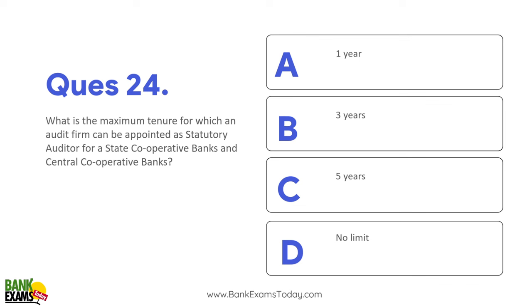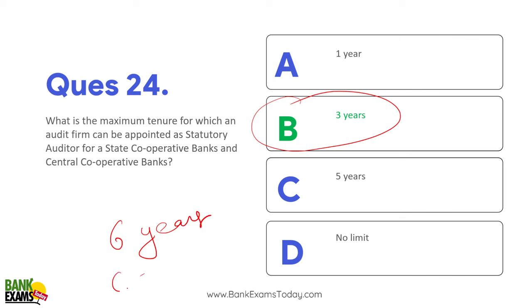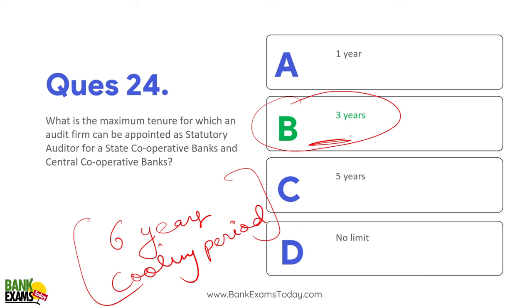What is the maximum tenure for which an audit firm can be appointed as statutory auditor for state or central cooperative bank? Teen saal ke liye kisi bhi audit firm ko appoint kiya ja sakta hai for state and central cooperative bank. Uske baad 6 saal ka cooling period hoga - two terms ka cooling period hoga. Please remember that, it's very important - 6 saal ka cooling period hai teen saal appoint karne ke baad.